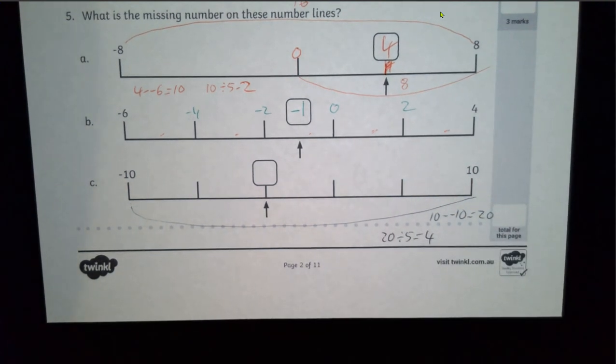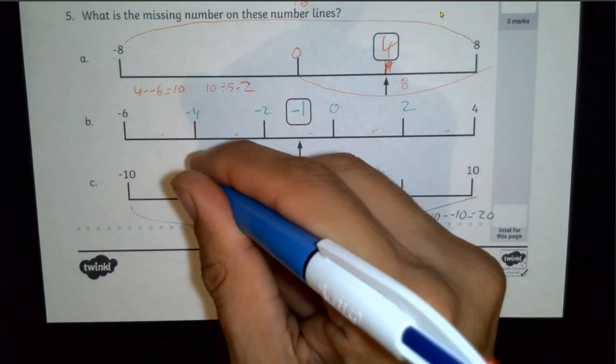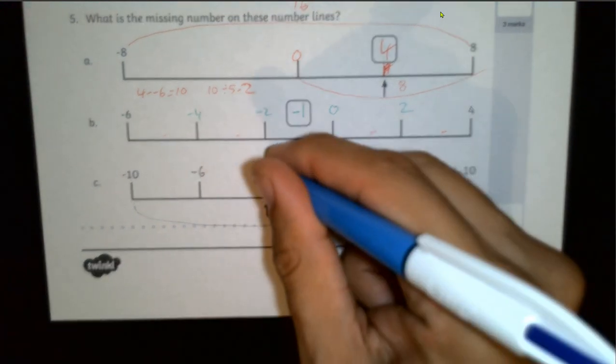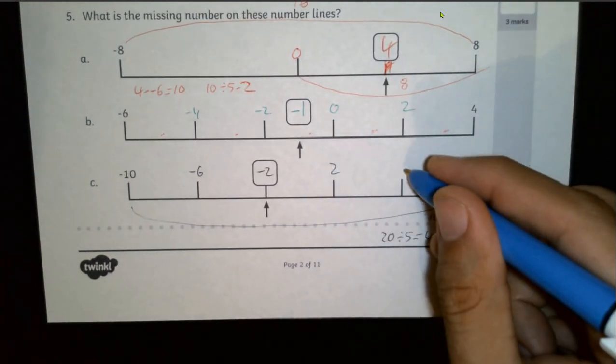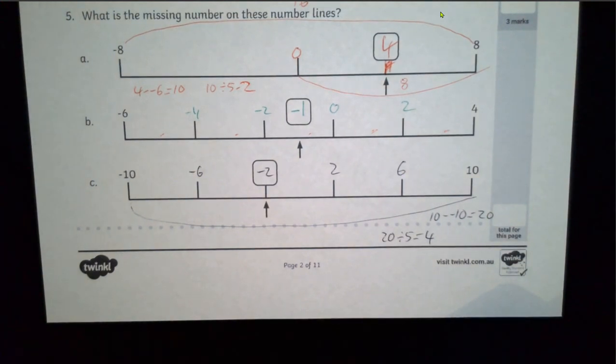So we should really be going up by 4 every time. We're going to go from minus 10 to minus 6, plus another 4 to minus 2, plus another 4 to 2, plus another 4 to 6, plus another 4 to 10. So it all works out. Minus 2 is my answer.